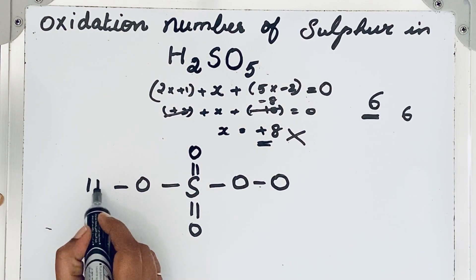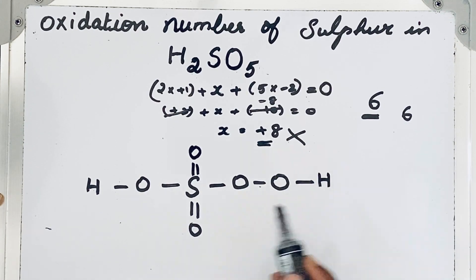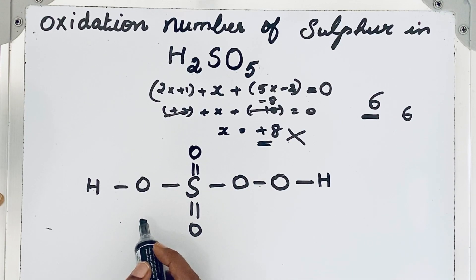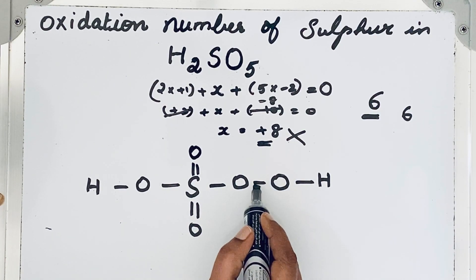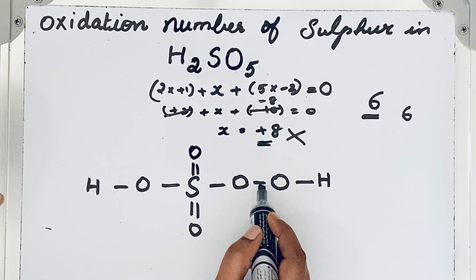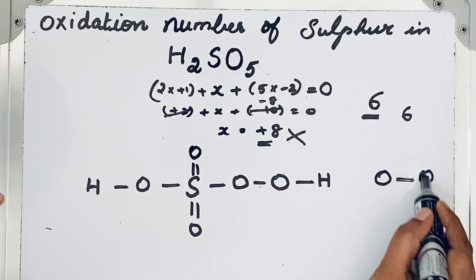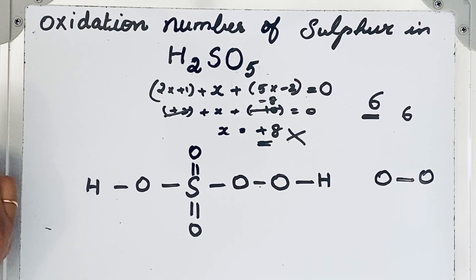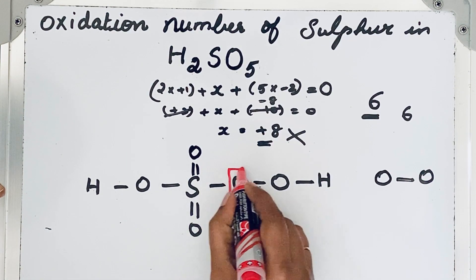Sulfur, 5 oxygen atoms are over. Now hydrogen, terminal, it is attached to terminal oxygen. So this is the structure of H2SO5. See, this oxygen is attached to oxygen by single covalent bond. So whenever 2 oxygen atoms are attached by single covalent bond, then we call it a peroxy linkage. So how many peroxy linkages here in H2SO5? One peroxy linkage is there.